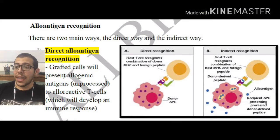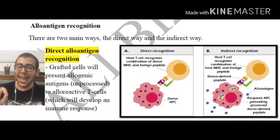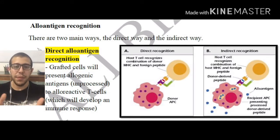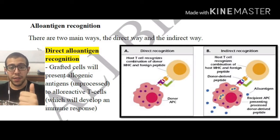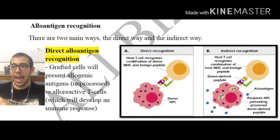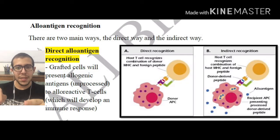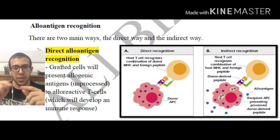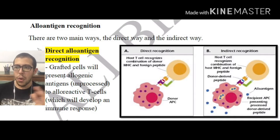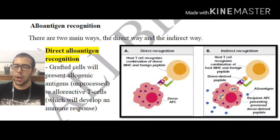So the direct alloantigen recognition. Grafted cells will present the allogenic antigen. The grafted cells are the ones from the donor, and these allogenic antigens are the ones that are going to be telling the recipient's T cells that this is not self.